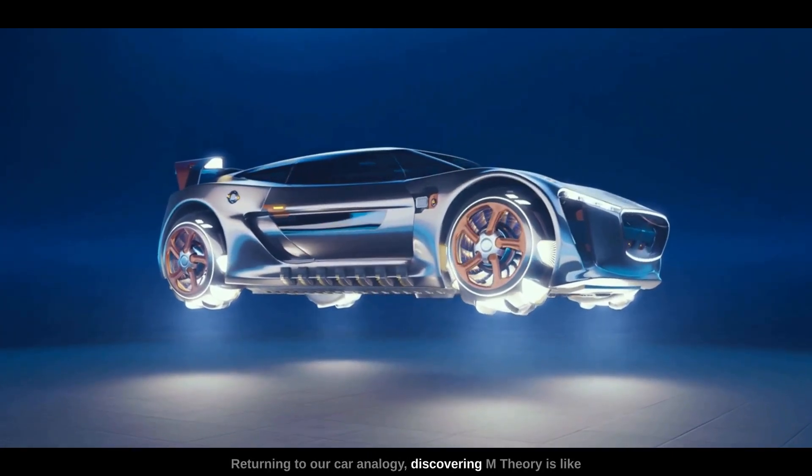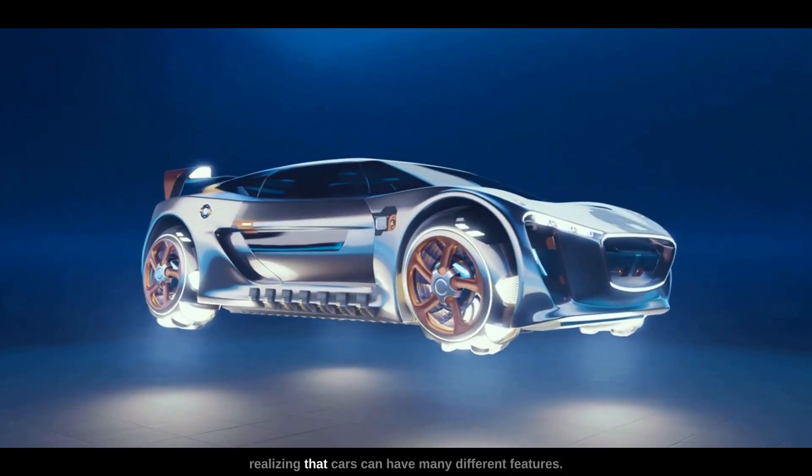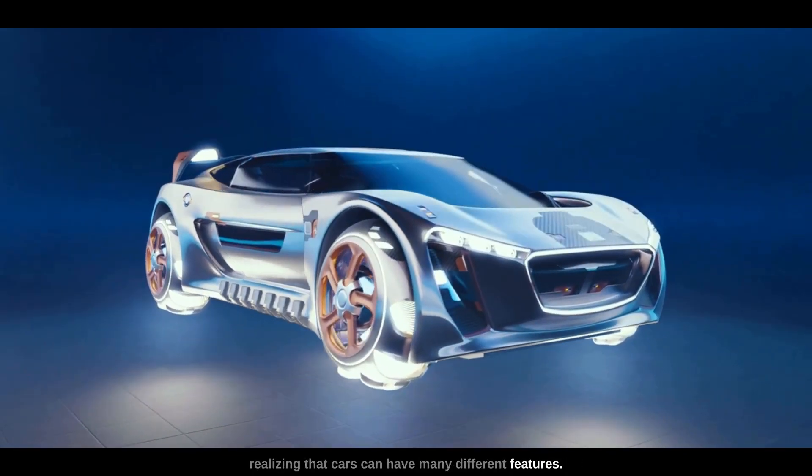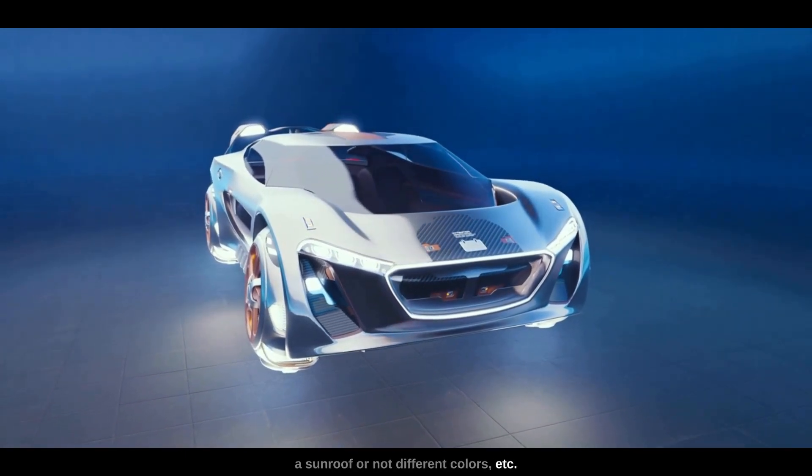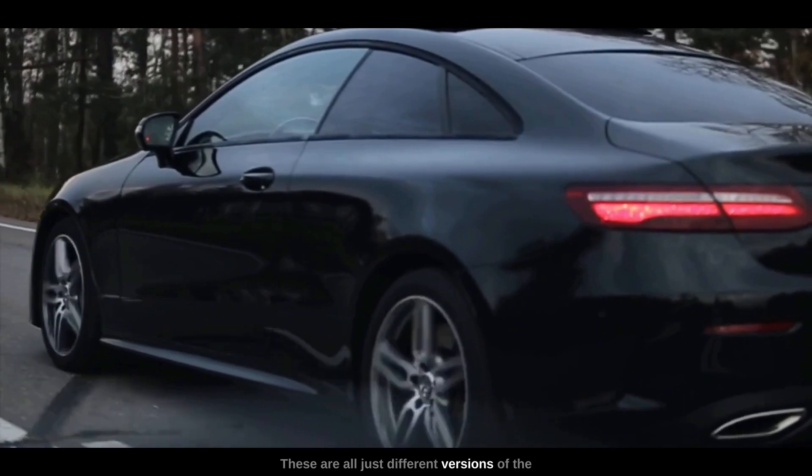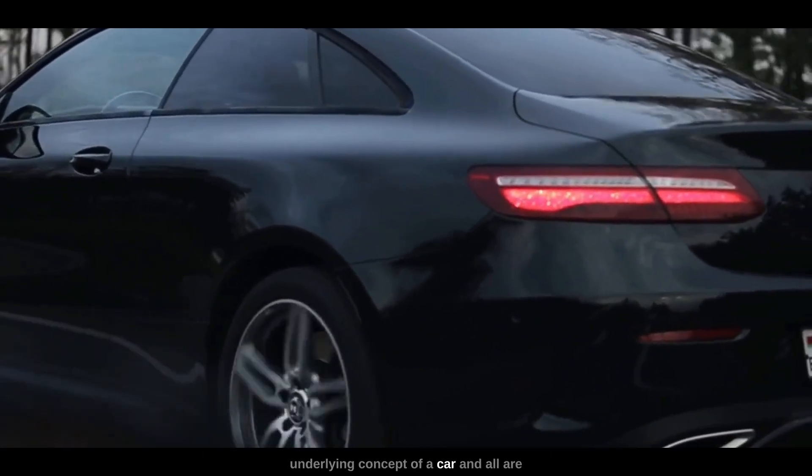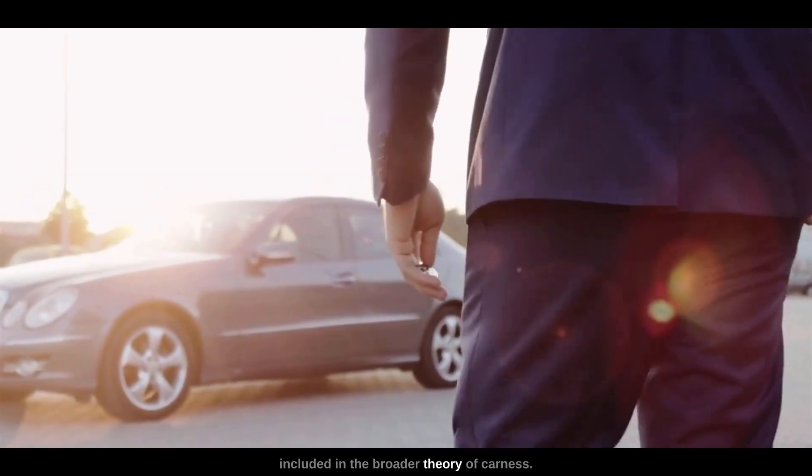Returning to our car analogy, discovering M-theory is like realizing that cars can have many different features: they can have two doors or four, a sunroof or not, different colors, etc. These are all just different versions of the underlying concept of a car, and all are included in the broader theory of carness. In the same way, all five string theories are just different versions of the underlying M-theory.